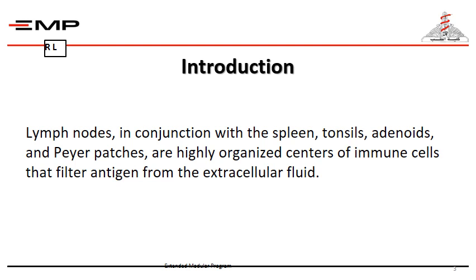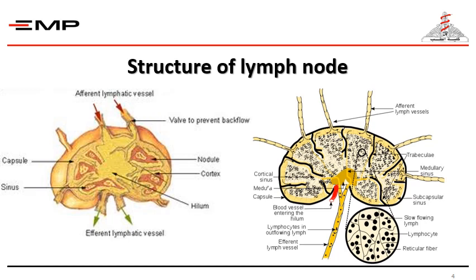Humans have approximately 500 to 600 lymph nodes distributed throughout the body, with clusters found in the underarms, groin, neck, chest, and abdomen. Lymph nodes, in conjunction with the spleen, tonsils, adenoids, and Peyer's patches, are highly organized centers of immune cells that filter antigen from the extracellular fluid.